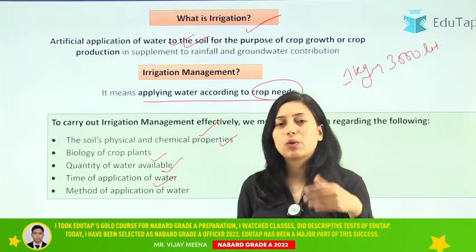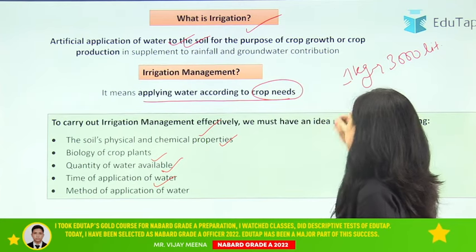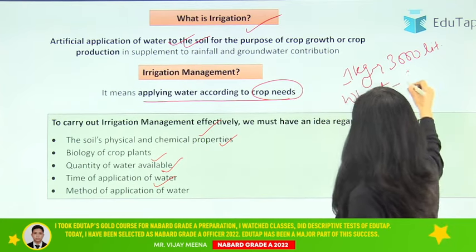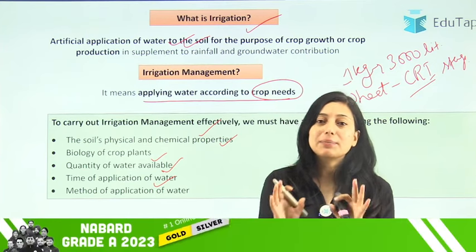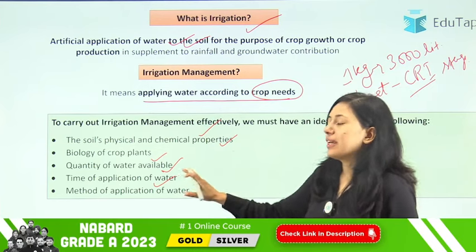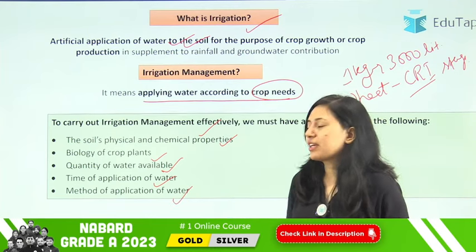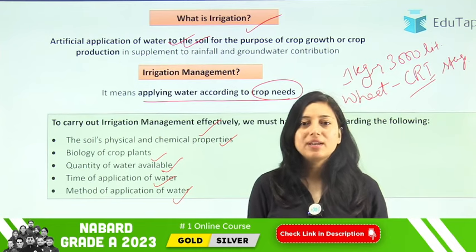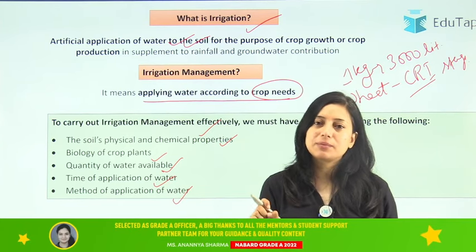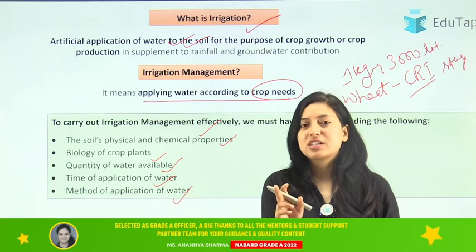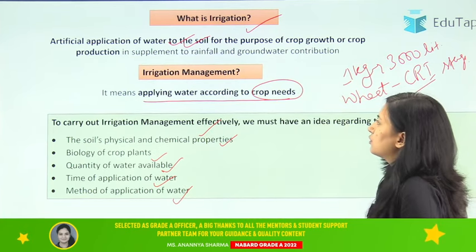The fourth factor is time of application of water. Every crop has a critical stage where it requires more water, so irrigation management depends on that critical stage. For example, in wheat we have CRI — the Crown Root Initiation stage — which is considered a very critical stage at which irrigation must be applied. The fifth factor is method of application of water: flooding requires more water while drip irrigation requires less, so management will depend on the method used.